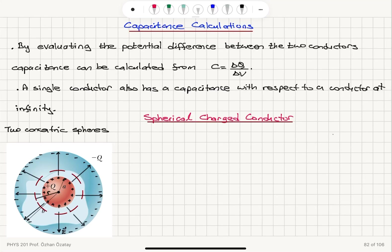Capacitance calculations: here we're going to deal with how to calculate the capacitance of any device. The procedure is very simple — we evaluate the potential difference between the two conductors, and capacitance can be calculated from C equals delta Q over delta V. Remember that capacitance is the capacity to store charge under the application of a potential difference delta V.